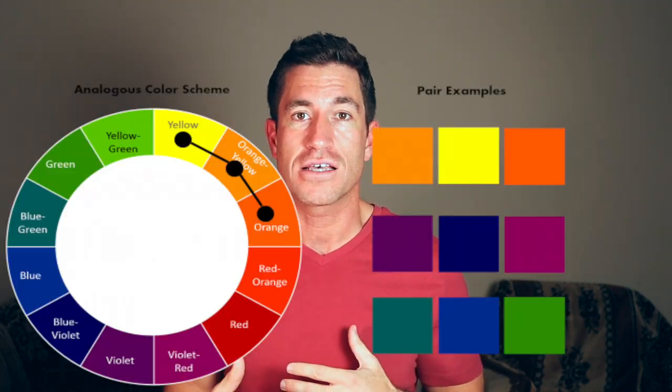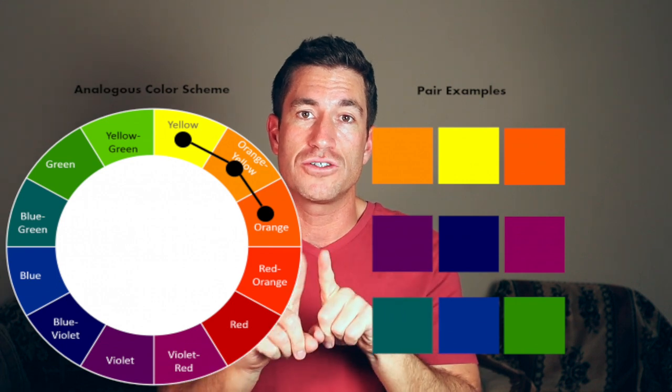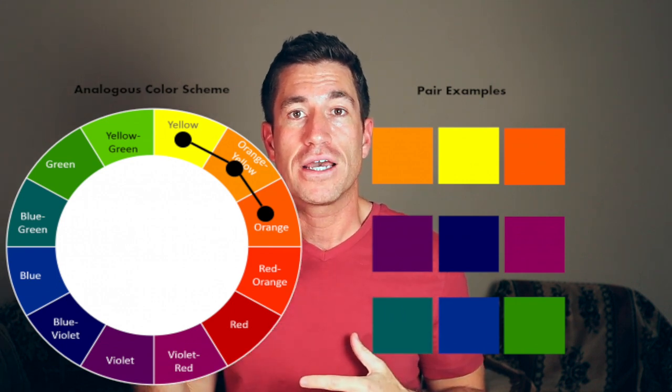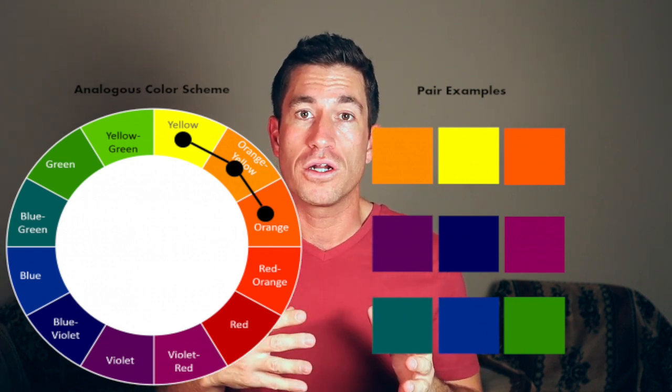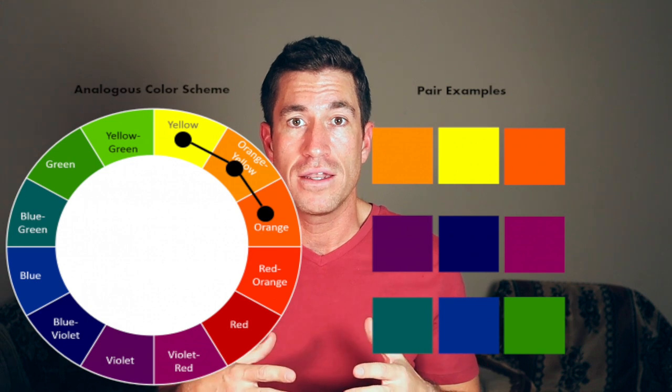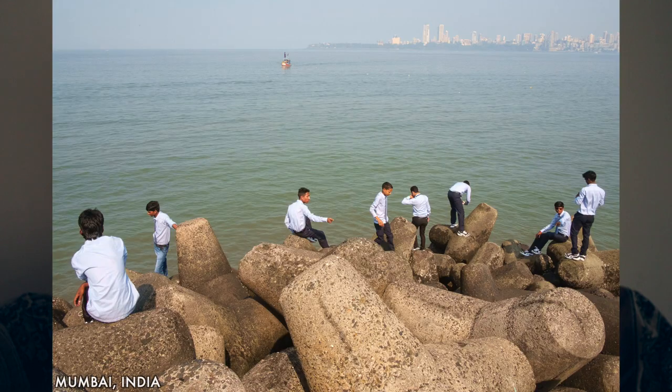Knowing and seeing how complementary colors work well together will allow you to look at different scenes and know how they'll look in a photo. Then you also have analogous colors — two colors that lie next to each other on the color wheel, like red and orange. Colors near each other create more of a harmony and are pleasing to look at together, but they don't have the same vibrance or contrast as complementary colors. Analogous colors are good for mood, atmosphere, and backgrounds.